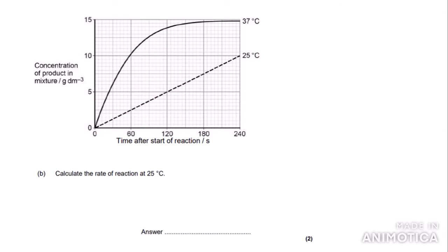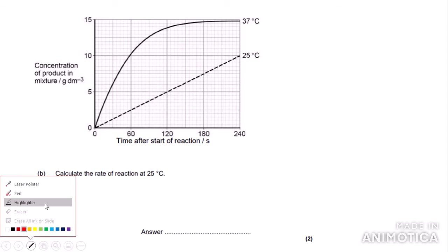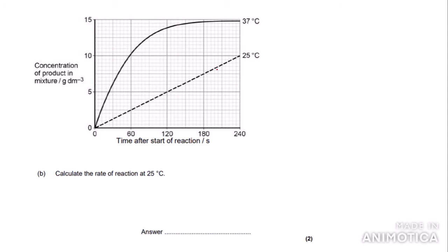Now I'm going to go through a few examples of practical exam questions. This graph comes from experiments by students investigating how temperature affects enzyme activity. The straight line here represents how the concentration of product in the mixture changes over time at 25 degrees Celsius, and this one is at 37 degrees Celsius. As you can see, they are very different shapes.